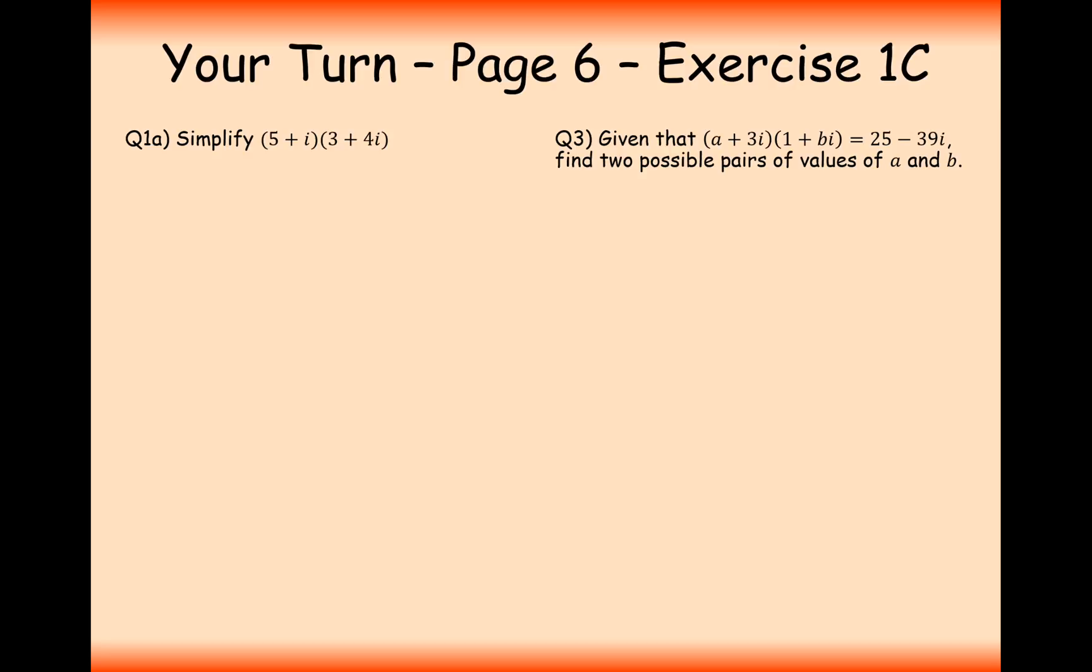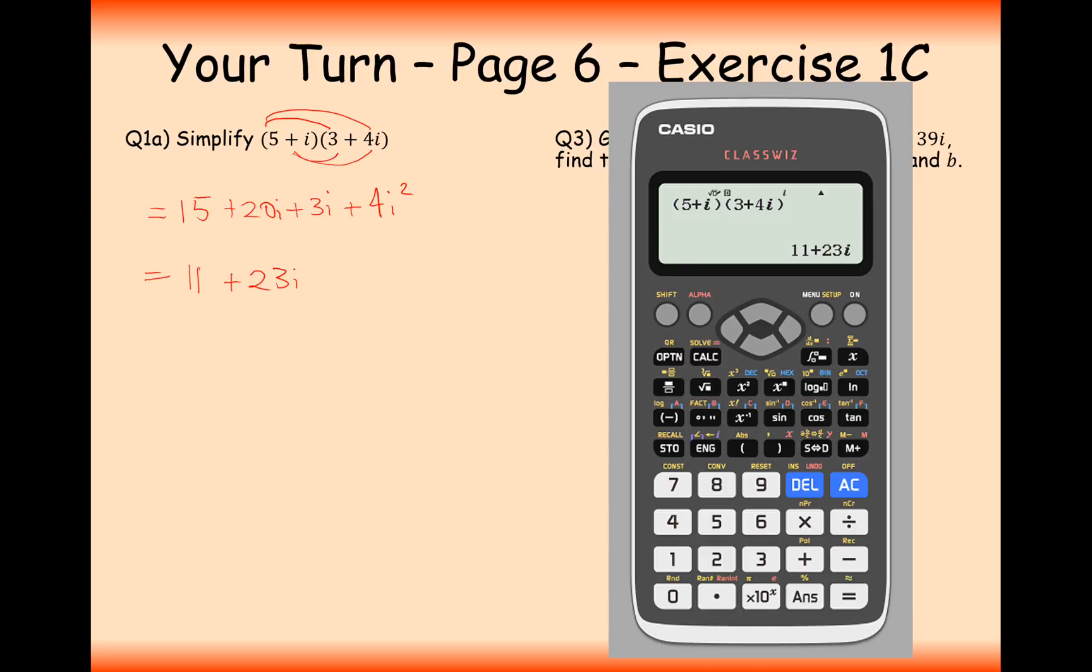Your turn to have a go at these two questions here then. Pause the video and try them out. Alright then, let's have a look at the first one. So it's 5 plus i times 3 plus 4i. Let's expand the brackets using expanding the bracket method. So 15 plus 20i plus 3i and then it's 4i squared. Now, i squared will simplify to minus 1, so that's now effectively a minus 4, so it's going to be 11 plus 23i. Let's just check that on the calculator, type it in, and you get 11 plus 23i.